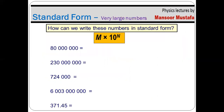Now we'll see the procedure to convert a number into standard form. These numbers are written in ordinary form and contain a large number of digits. The first step is to identify the position of the decimal. If the decimal is not between the digits, it means it is at the end of the number. After identifying the decimal position, we find the value of m, which is the first non-zero digit in the string — a value greater than or equal to 1 but less than 10.